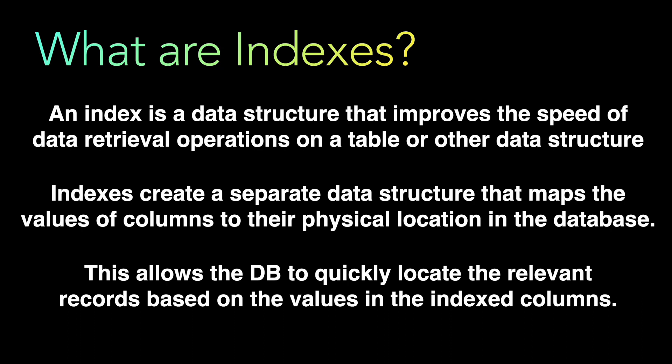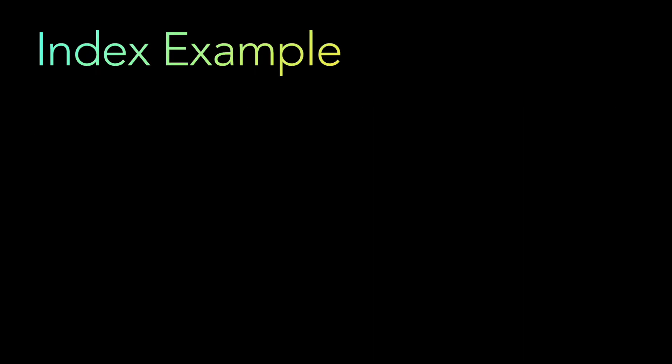If you have a table and create an index on one column, in the background they map that index to the physical location of that column in the database. Whenever you are querying on that indexed field, the database can quickly locate the data because the physical location is constant — which is why indexes work very fast and are primarily used for lookup operations.